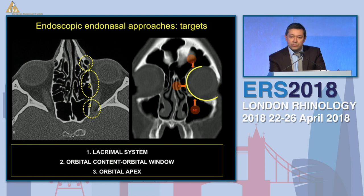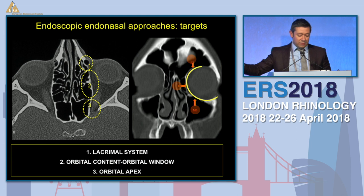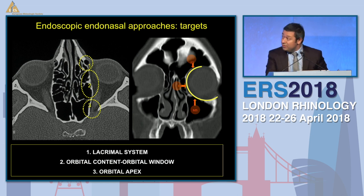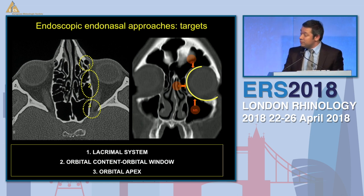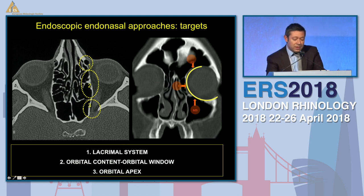You know, through the nose you can get three targets: of course the nasolacrimal system, then the orbital content, and the orbital apex. I will focus my attention mainly on the orbital content.